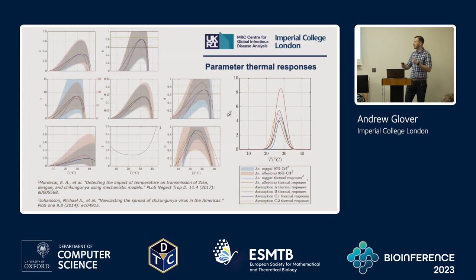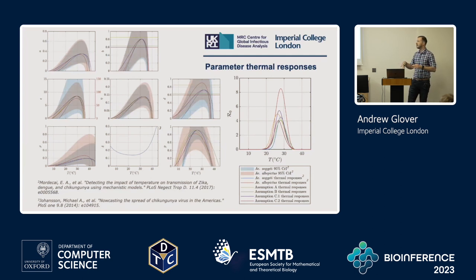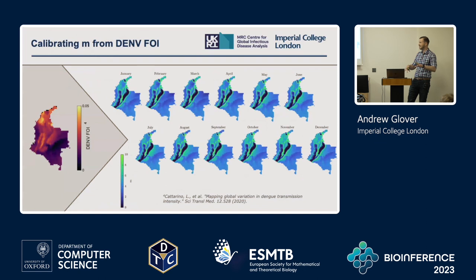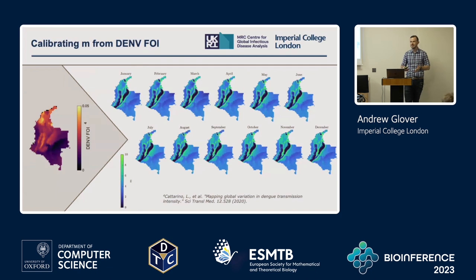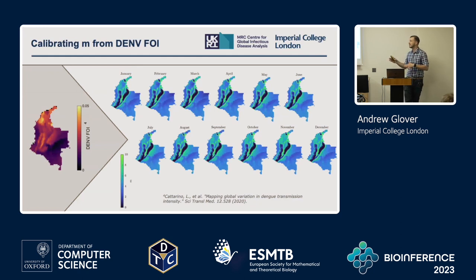The model encompasses various temperature-dependent functions for different parameters, resulting in a reproductive number that's dependent on temperature. We investigated various functional forms, which I'll skip over today. Another big unknown is the ratio of adult female mosquitoes to humans. In the model, this was calibrated with previous estimates generated by colleagues in the department for the average annual dengue force of infection, and I was able to use that to generate seasonal maps of the ratio of adult female mosquitoes to humans.